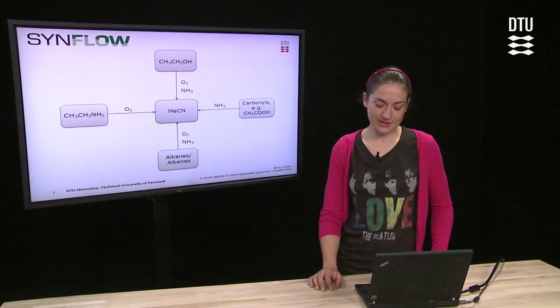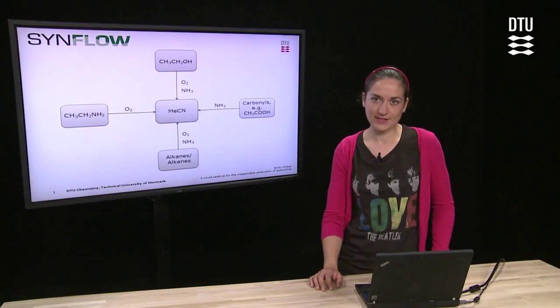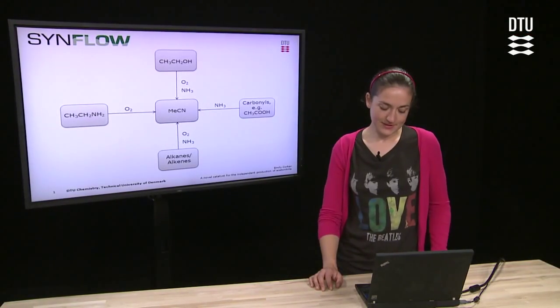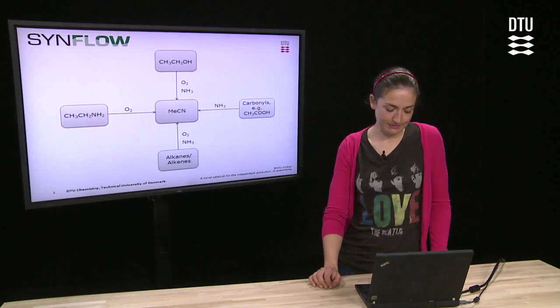In particular, my project is concerned with the flexible and environmentally friendly production of nitriles. As a first model compound, I've selected acetonitrile, perhaps the simplest and most widely used nitrile.